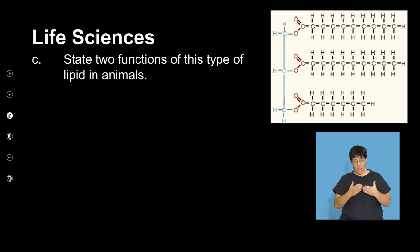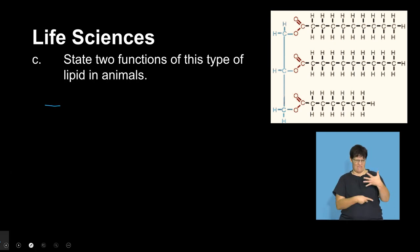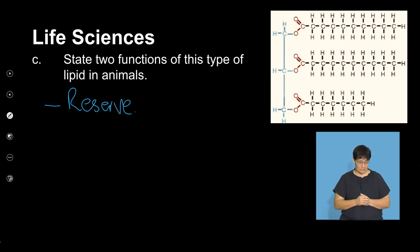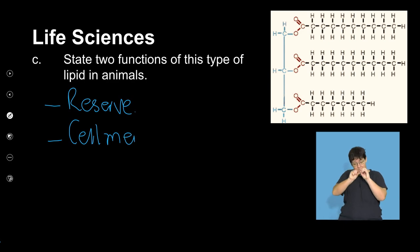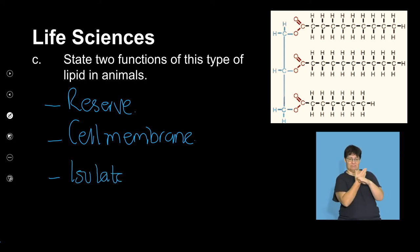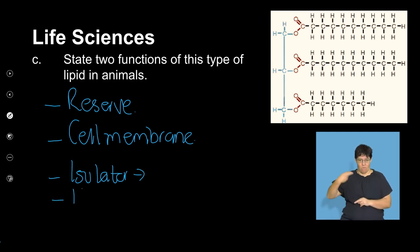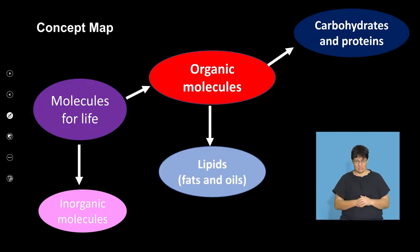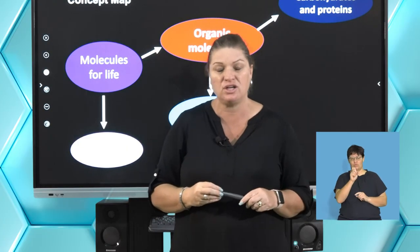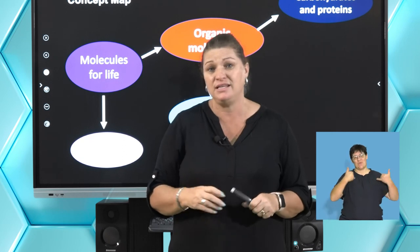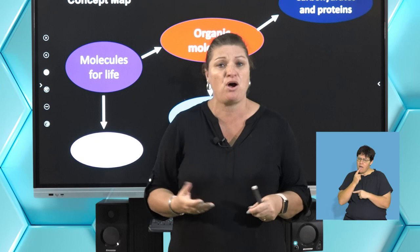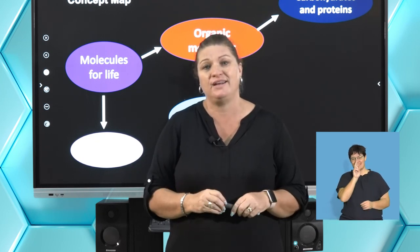State two functions of this type of lipid in animals — there were lots of them! There was reserve energy. It helped build our cell membranes. It was underneath our skin as an insulator that kept us warm. It's a hormone that helps keep our stress hormones nice and healthy. Those are just a few kinds of questions we can ask on this section. I hope you enjoyed today's lesson. Go and look in your books, find past papers and do more questions on this section. We will see you again next time. Bye-bye.